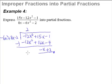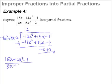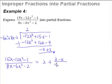This gives us a remainder of negative x plus 3. So after doing this long division, we know that this improper fraction can be expressed as a mixed fraction — the quotient plus the remainder divided by the divisor. So here we now have a proper fraction that we can work on.